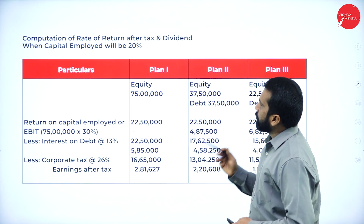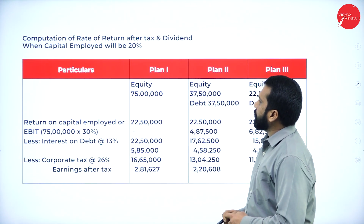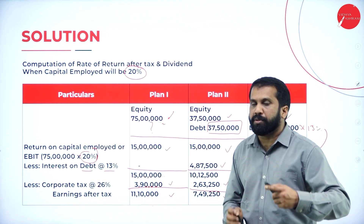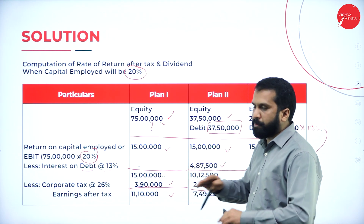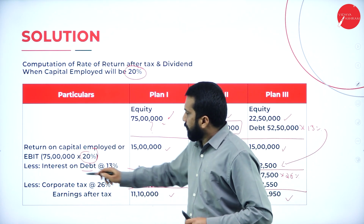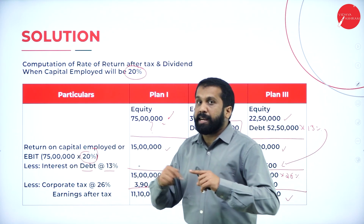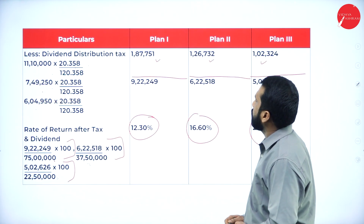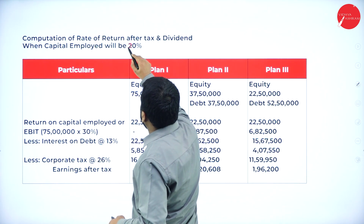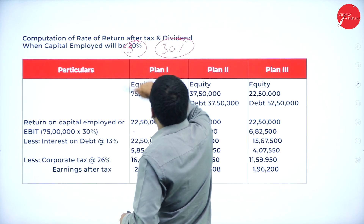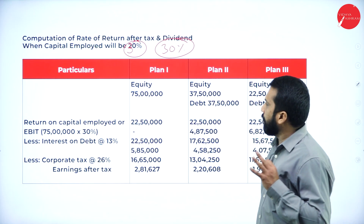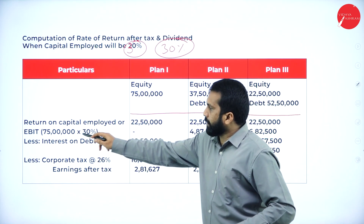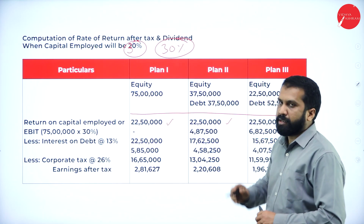Hope you are clear. Similarly, whatever you have done is for 20%. Now what we are supposed to do is the same calculation for 30%. Everything will remain as it is, except instead of 75,00,000 into 20%, the next problem will be 75,00,000 into 30%. This problem is for 30%. The same calculation — 75,00,000 into 30% will become 22,50,000 for each option.